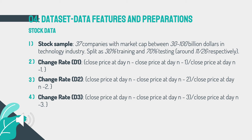We use three change rate definitions. Change rate day one means today. Change rate day two means the change rate spanning today and tomorrow. Change rate day three spans today, tomorrow, and the day after tomorrow. The reason is that we cannot get profit on the same day a big event happens, so only change rate day two or day three will allow us to benefit.